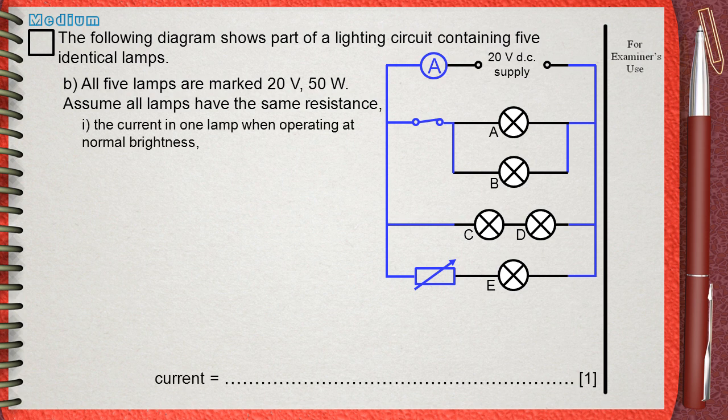Question 1: Calculate the current in one lamp when operating at normal brightness. As we did before, the first thing you will identify the givens. The first given is the 20V and we have also 50W which is power. The request is the current. Current is I.